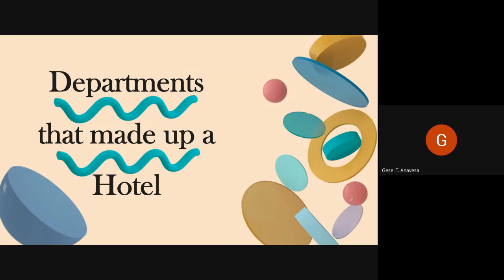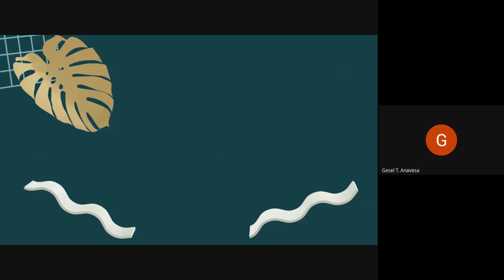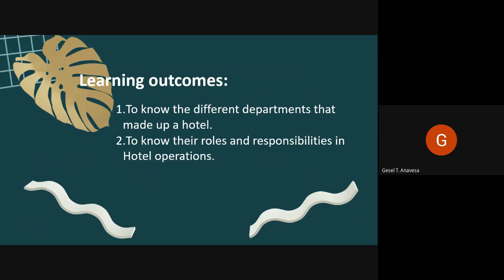Good morning, everyone. Last meeting, I gave you the reading materials about the organizational structure of a hotel. You have read the different departments in a hotel. Now, we are going to flashback on those discussions and focus on the sub-departments of the hotel. For today's lesson, our learning outcome is to know the different departments that made up a hotel and to know the roles and responsibilities in hotel operations.